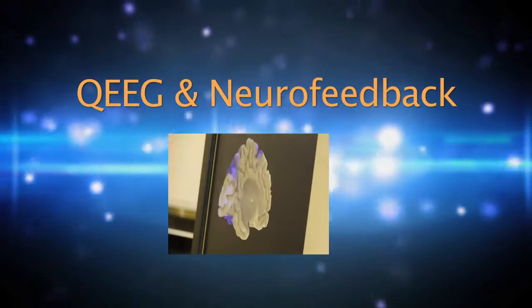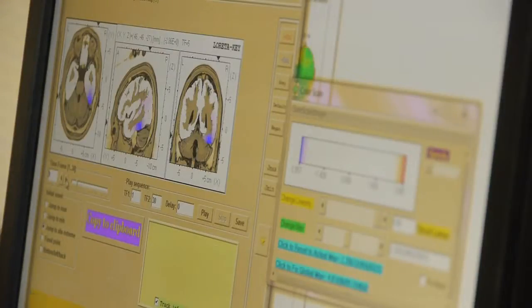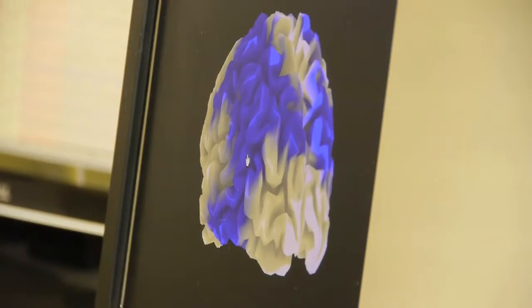We have a lot of different frequencies in the brain: alpha, theta, delta, gamma, high beta and low beta.